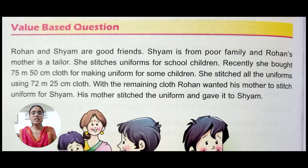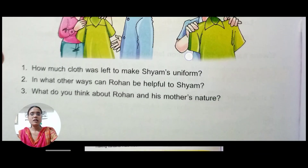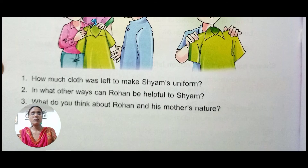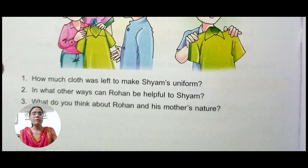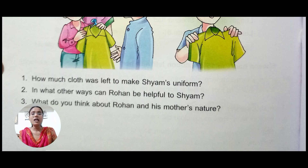Now we will see what are the questions asked. The first question is: how much cloth was left to make Shyam's uniform? The total length bought minus the amount used will give us the answer. The second question is: in what other ways can Rohan be helpful to Shyam? Like he could give him a bag, stationery, or books. The third question is: what do you think about Rohan and his mother's nature? Rohan and his mother helped Shyam, so it reflects their helping nature.